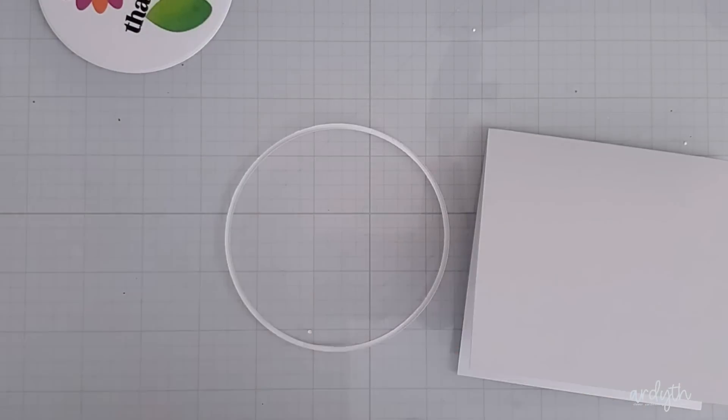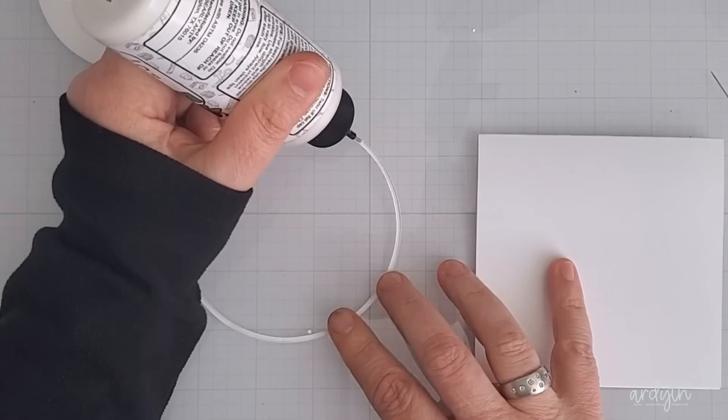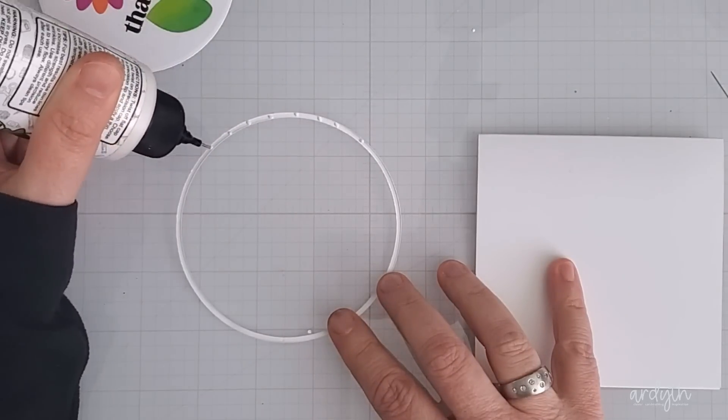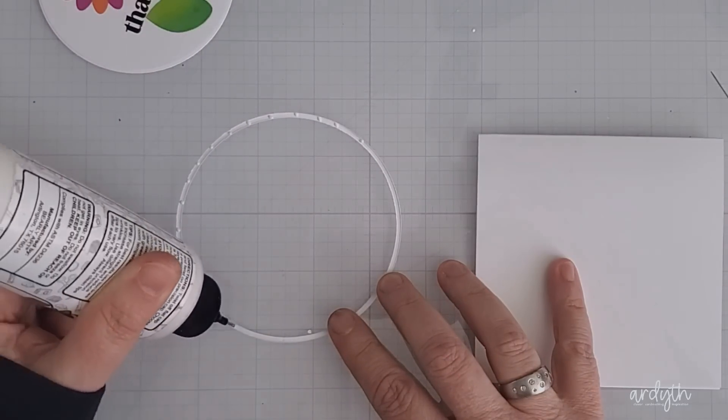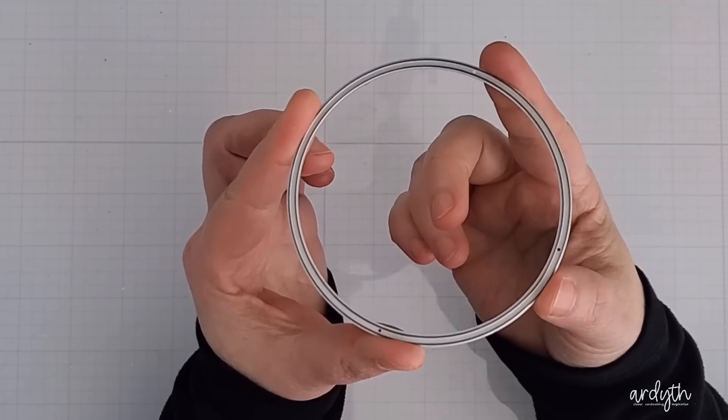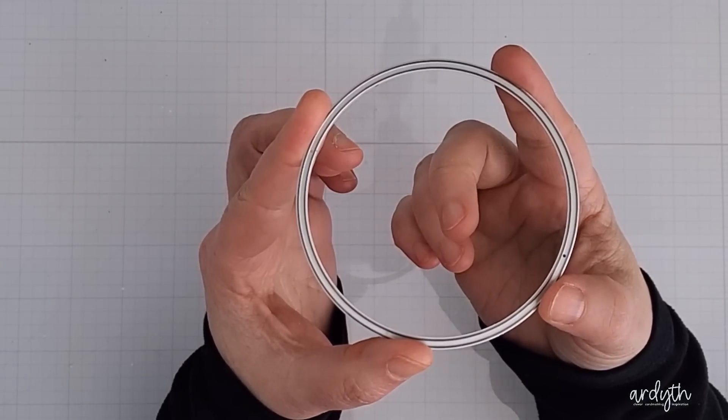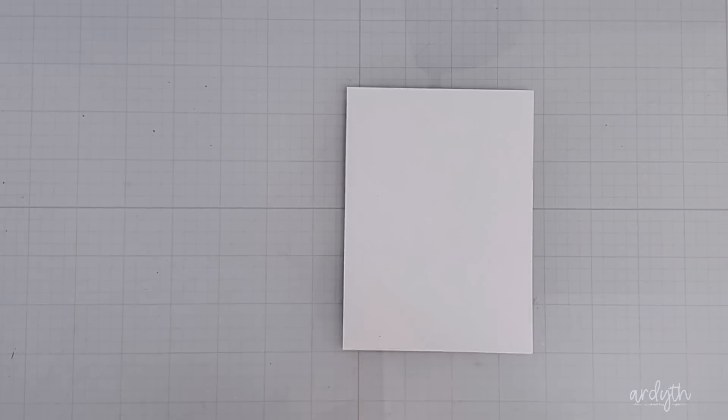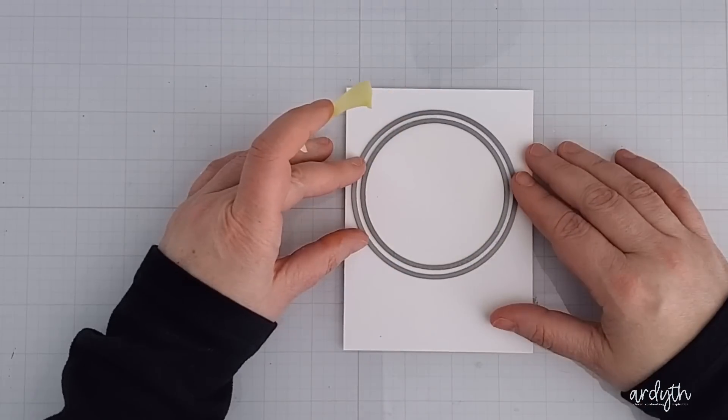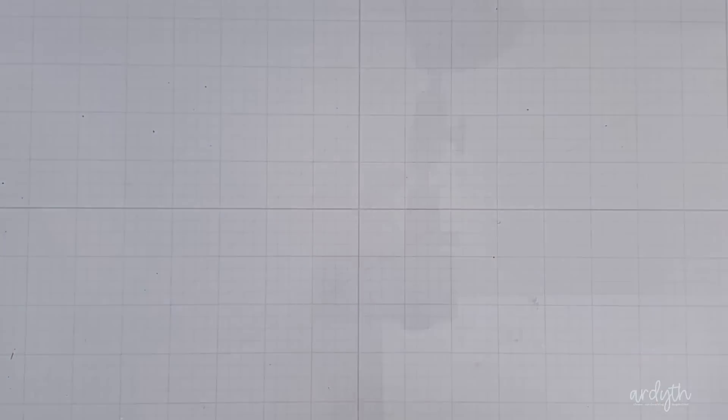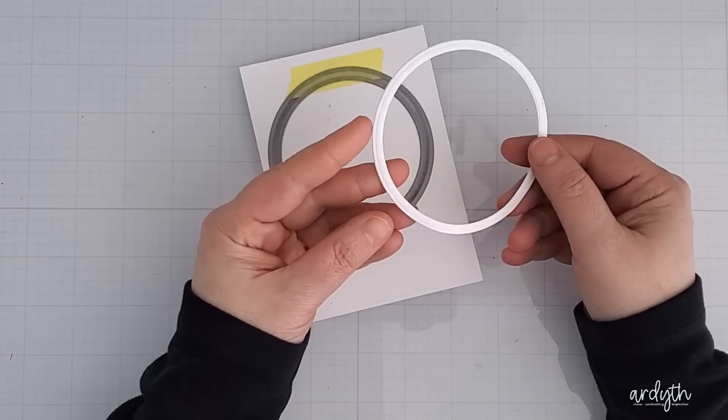I cut this one with a circle die to fit onto another square card and to add some interest this time I'm adding a white frame to the card base. My circle dies from Ellen Hutson cut this frame automatically with each circle I cut, but you can get the same look by grabbing two nesting dies in any shape that are close in size, taping them together and running them through your die cutting machine.